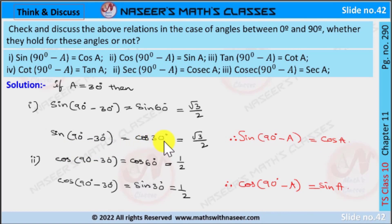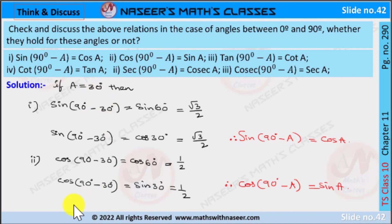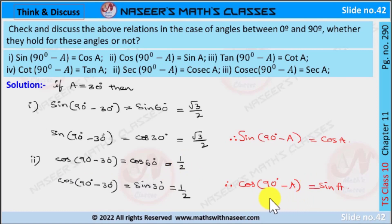The second relation is cos(90° - a) = sin(a). If a = 30°, then cos(90° - 30°) = cos(60°). We already know cos(60°) = 1/2. By using complementary angles, cos(90° - a) is written as sin(a), so cos(90° - 30°) = sin(30°). We already know sin(30°) = 1/2.